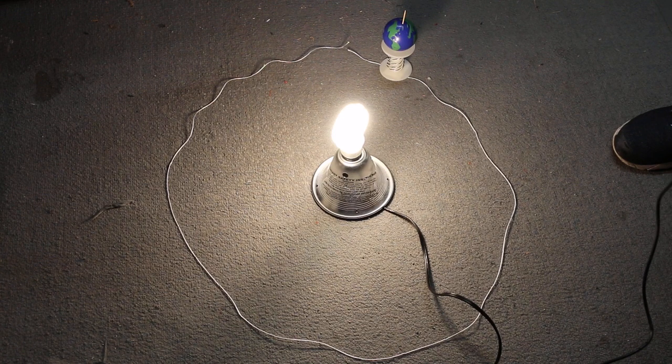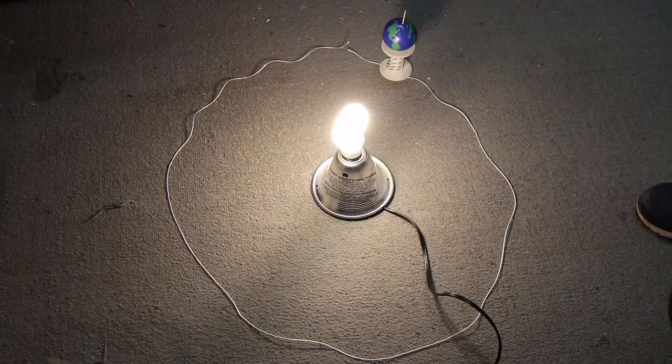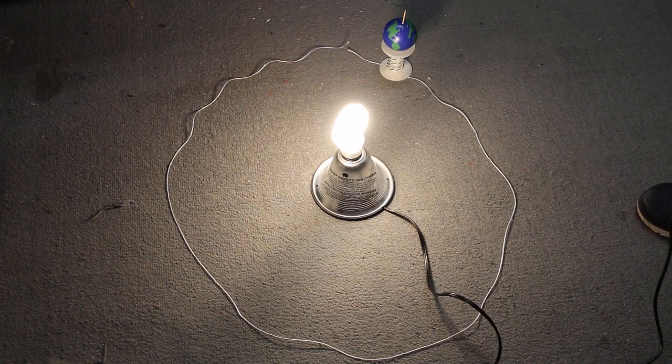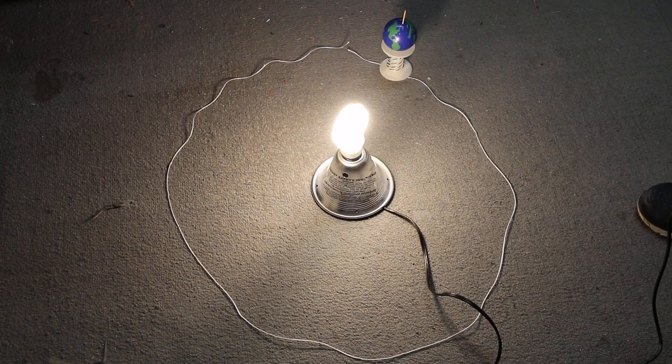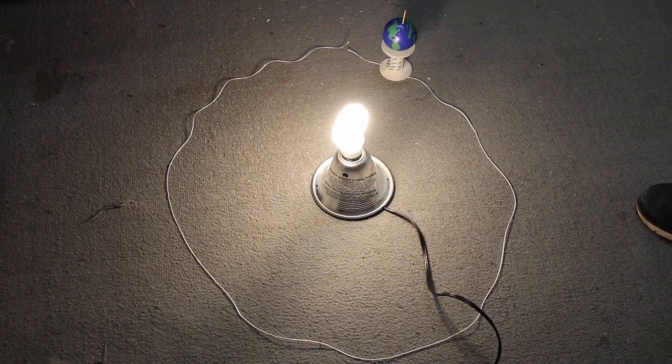And so that is the firm, factual answer to the question: no, the moon does not have a dark side. Stated another way, the moon does not have a side of it that's always in the darkness and never gets any sun.